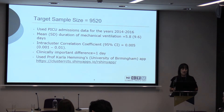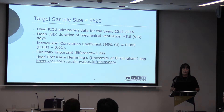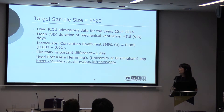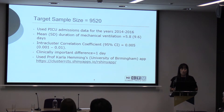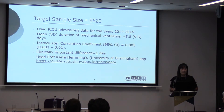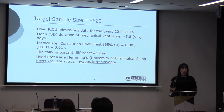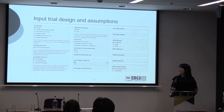Our target sample size was 9,520 patients. We used PICU admissions data from 2014 to 2016 to inform our sample size assumptions. From this data we calculated a mean of 5.8 days with a standard deviation of 9.6 days, and an intra-cluster correlation coefficient of 0.005. It was postulated that a reduction of one day of ventilation was both clinically important and achievable.